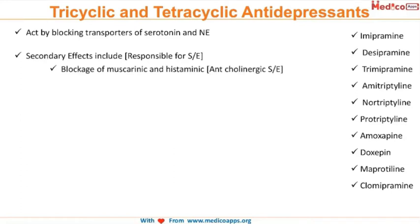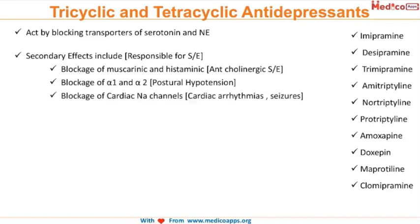One of the first secondary effects is blockage of muscarinic and histaminic receptors, which leads to the anticholinergic side effects of this class of drugs. They also block alpha-1 and alpha-2 receptors, and that is the reason why they cause a lot of postural hypotension, especially when the drug is first started.